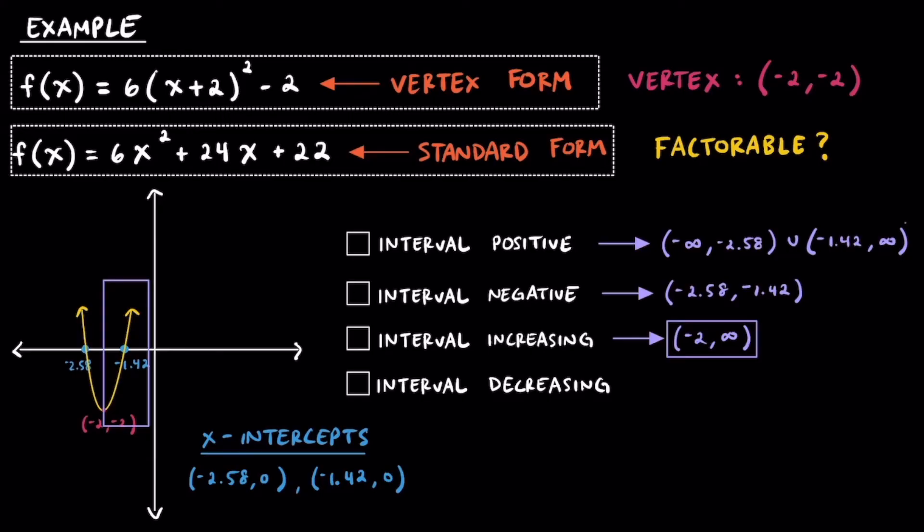For where this quadratic is decreasing, that's from negative infinity to -2. And with that, we were able to figure out where this quadratic was positive, negative, increasing, and decreasing.